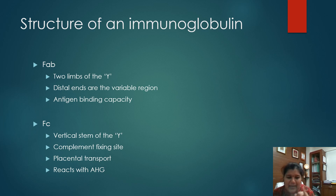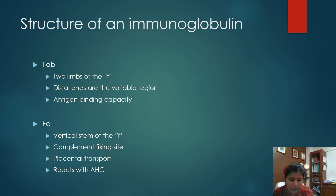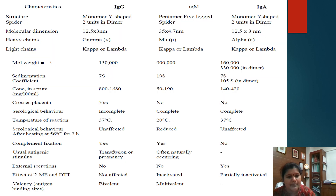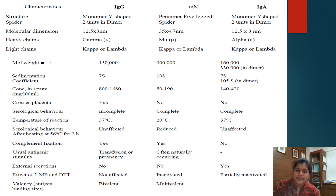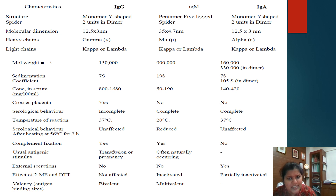The FC region — the vertical stem of the Y — has the complement fixing site. It favors placental transport and this portion reacts with the anti-human globulin. Based on the heavy chain — gamma, mu, or alpha — we can classify the immunoglobulins into IgG, IgM, IgA, IgE, and IgD.